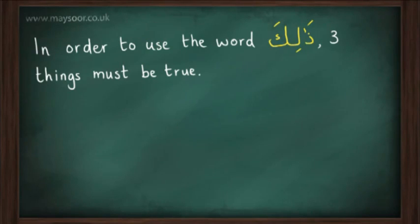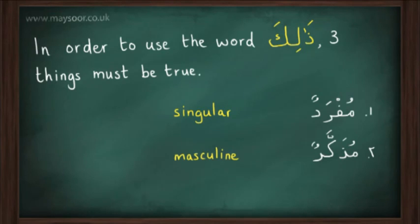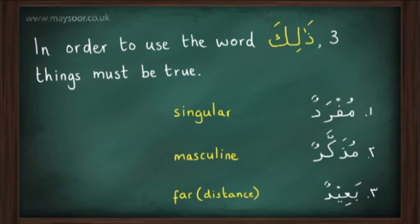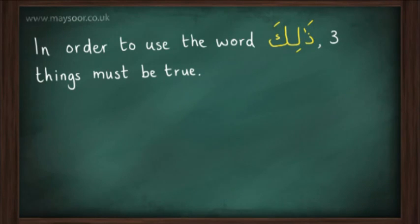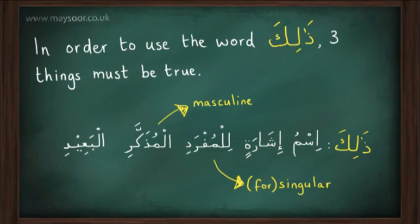In order to use the word ذالك, three things must be true. Number one, the thing or person you're speaking about has to be مفرد — singular. Number two, it has to be مذكر — masculine. And number three, it has to be بعيد — far or distant. So in defining ذالك, we can say: ذالك is an اسم إشارة للمفرد المذكر البعيد.